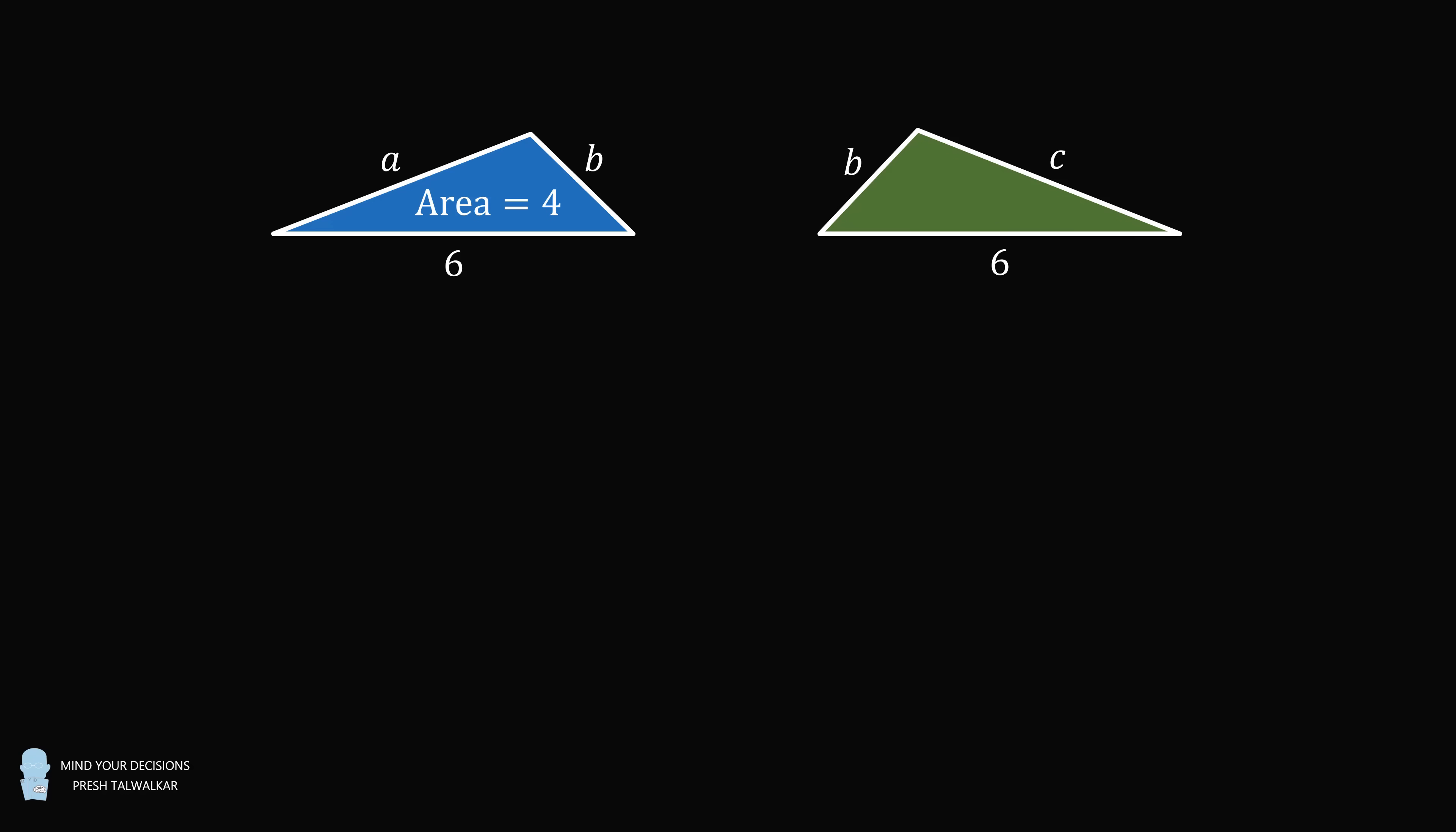Problem 2. You have one triangle with sides A, B, and 6 and an area equal to 4. A second triangle has sides B, C, and 6 and an area equal to 5.